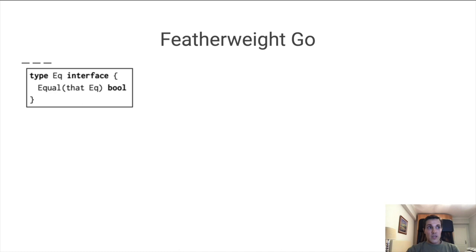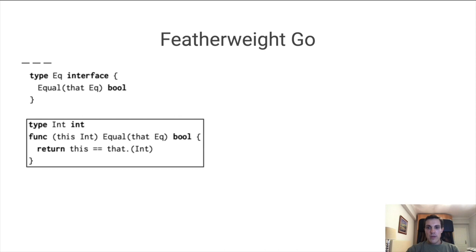Now we can make an existing type, such as integer, implement this interface by adding the corresponding equal method. In FG, to implement this method, you need a type assertion, or a cast, of that parameter back to int, so that you can then test for equality.